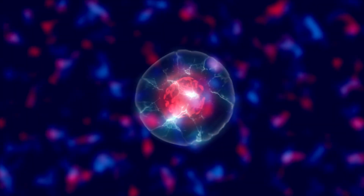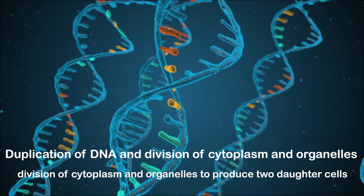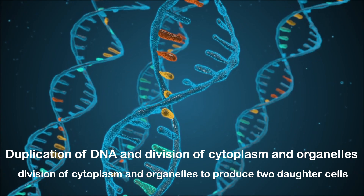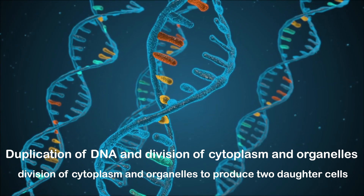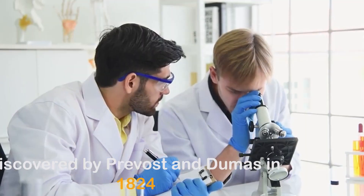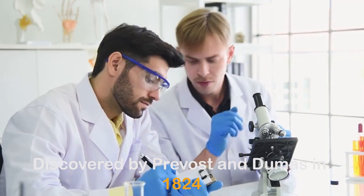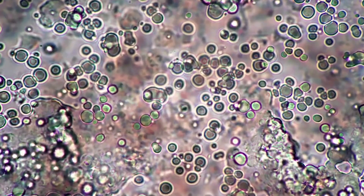Cell cycle is a series of events that take place in a cell, resulting in the duplication of DNA and division of cytoplasm and organelles to produce two daughter cells. It is a series of stages a cell passes through to divide and produce new cells, which is necessary for a living organism to grow.